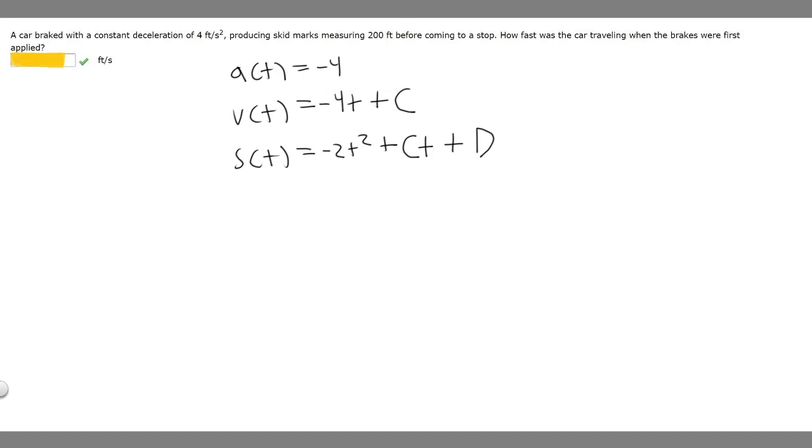Now that we got all this, what we want to do is take our velocity function, set it equal to 0, and solve for t, because we're trying to find the velocity when the brakes were first applied. So 0 equals minus 4t plus C. Moving C to the other side, we get minus C equals minus 4t. Dividing both sides by minus 4, we get t equals C over 4.